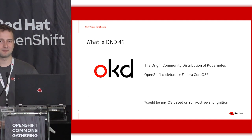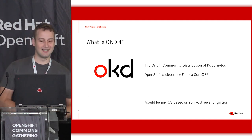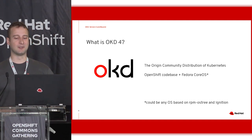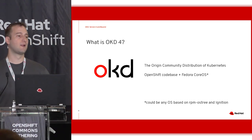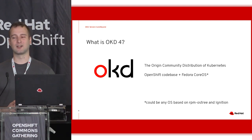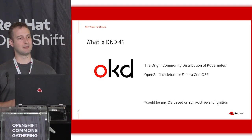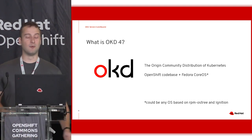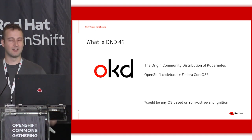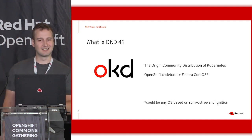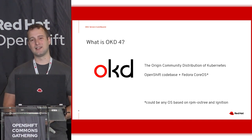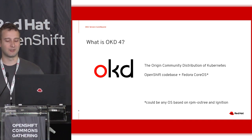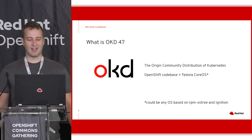What is OKD 4? OKD is the origin community distribution of Kubernetes. It's essentially the OpenShift code base plus Fedora CoreOS, Fedora CoreOS being the base operating system OpenShift or OKD runs on. There's a caveat — it could be any operating system based on RPM OS tree and Ignition.